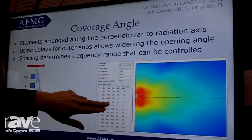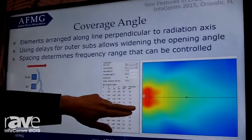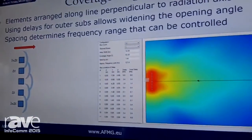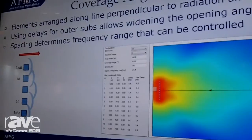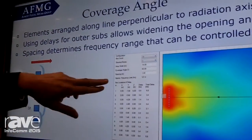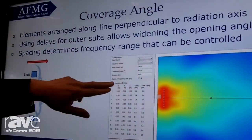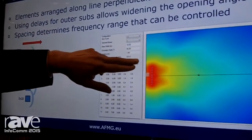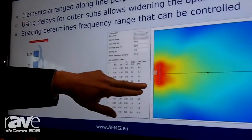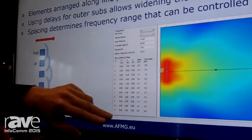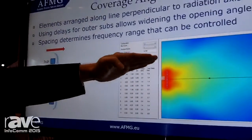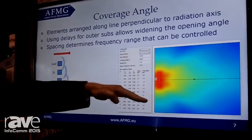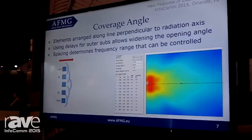You know the typical linear type subarray — we already have a macro where all the spacings are automatically calculated for you, and then you get a linear line array where you can determine the opening angle of the array.